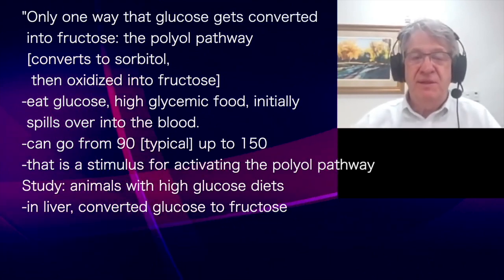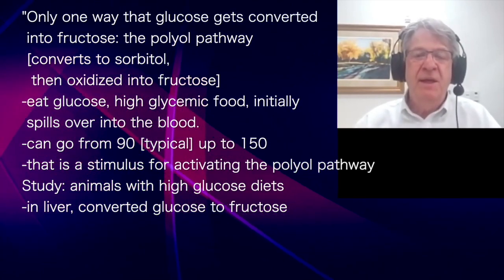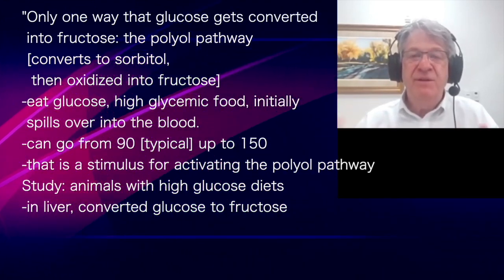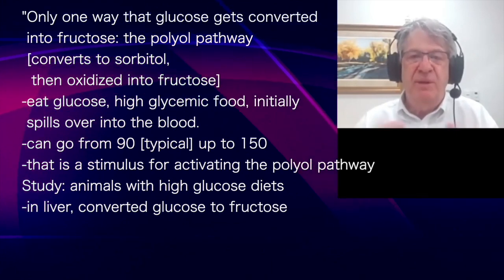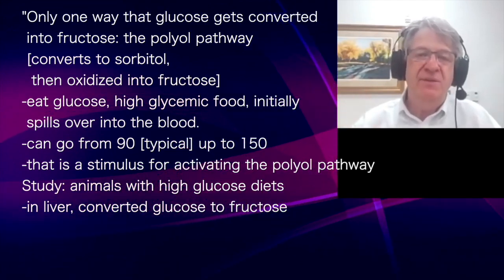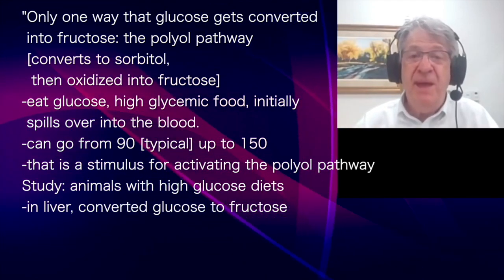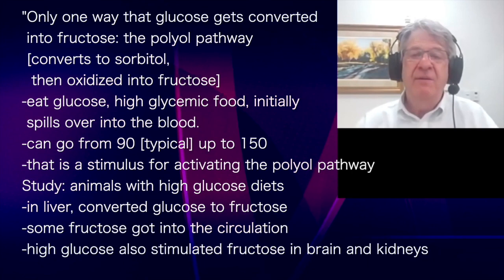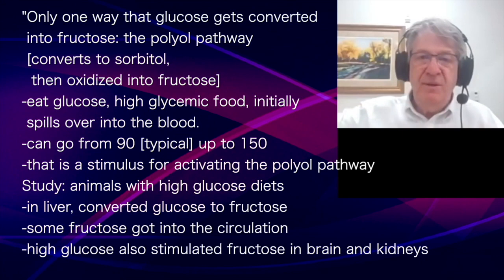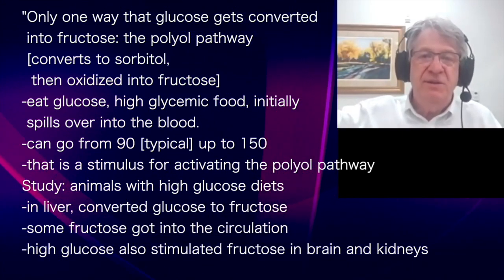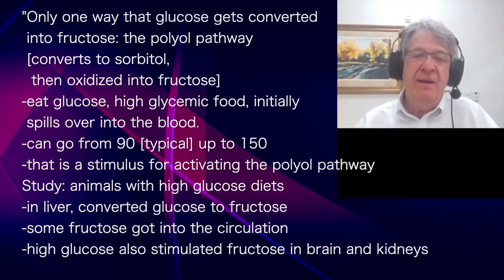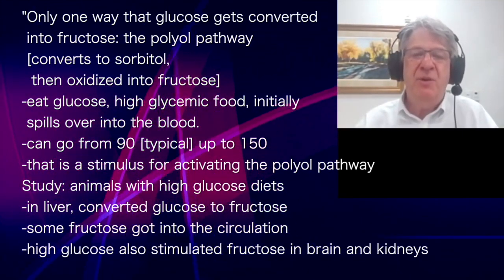When you eat, glucose gets absorbed through the intestine and into the portal vein, and the first organ it hits is the liver. The liver gets the brunt of what you absorb. So the liver received this wave of glucose that activated this pathway, and the liver started making fructose. Some fructose even got into the circulation. When high glucose reached other organs, it also could stimulate fructose production in places like the brain and kidneys — so high-glucose food was actually generating fructose.